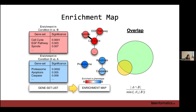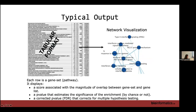How do we calculate this overlap? Within the enrichment map app you don't necessarily need to know these details, but there are three different metrics you can use to connect your pathways: the Jaccard overlap, the overlap coefficient, and the combined coefficient. By default we use the combined. The nodes are connected by calculating the overlap between two gene sets divided by either the minimum or the union of both sets. Depending on which enrichment analysis you're using, you might want to use a different type of connectivity.